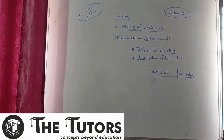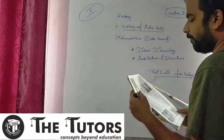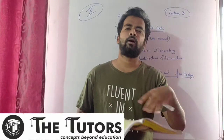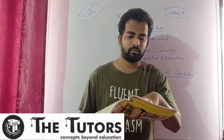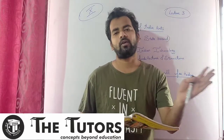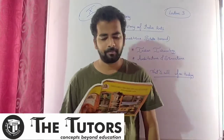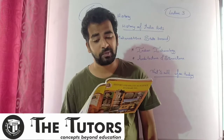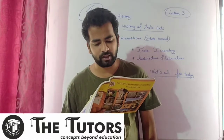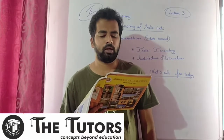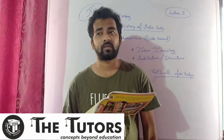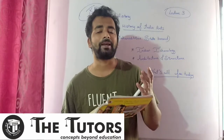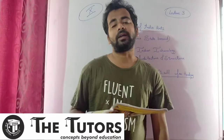Temple architecture in India began to develop around the 4th century CE during the Gupta period. The temples built at the beginning of the Gupta period had only the sanctum, i.e. Garbhagriha, and a veranda with 4 columns. Temple architecture in India had reached its peak by the 8th century CE. This is easily testified by the magnificent Kailasa temple of Ellora, which is one of the best examples of temple architecture in India.